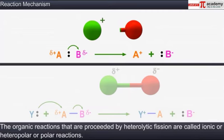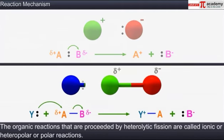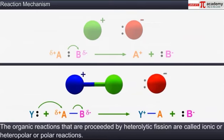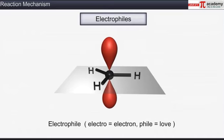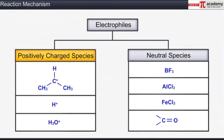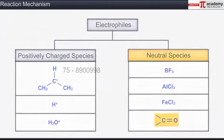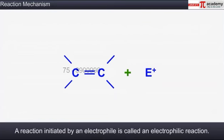All organic reactions preceded by heterolytic bond cleavage are known as ionic or heteropolar or polar reactions. Polar organic reactions are caused by two types of reagents: electrophiles and nucleophiles. An electrophile is an electron-seeking or electron-loving species as it is electron deficient. Electrophiles may be either positively charged such as carbocations, hydrogen ion, and hydronium ion, or electrically neutral species such as boron trifluoride, aluminum chloride, ferric chloride, and the carbonyl group. A reaction initiated by an electrophile is called an electrophilic reaction.